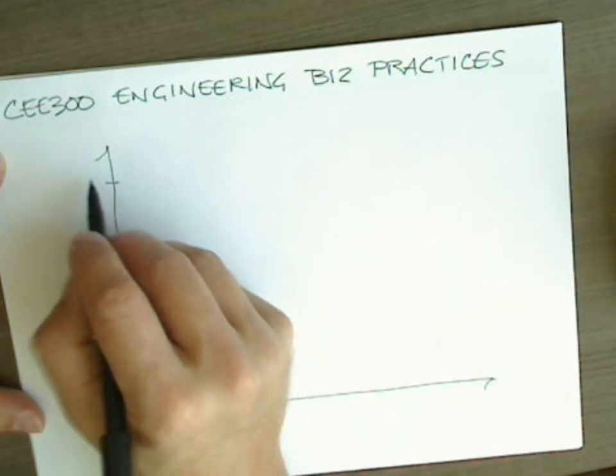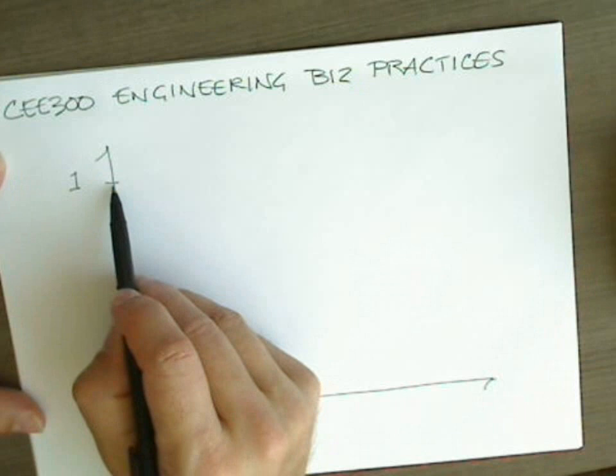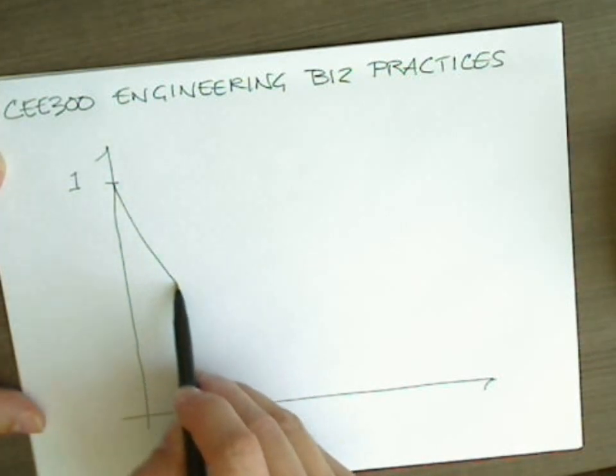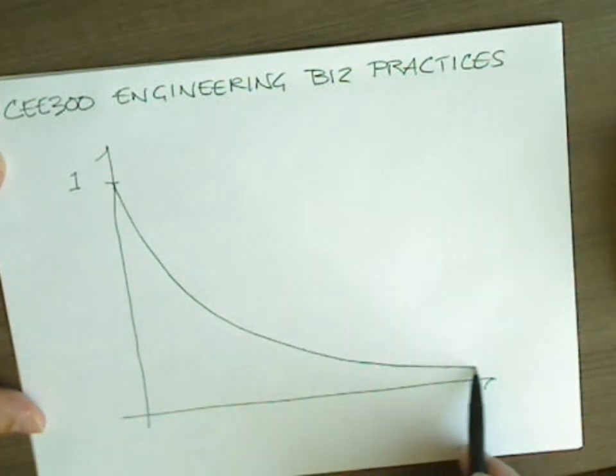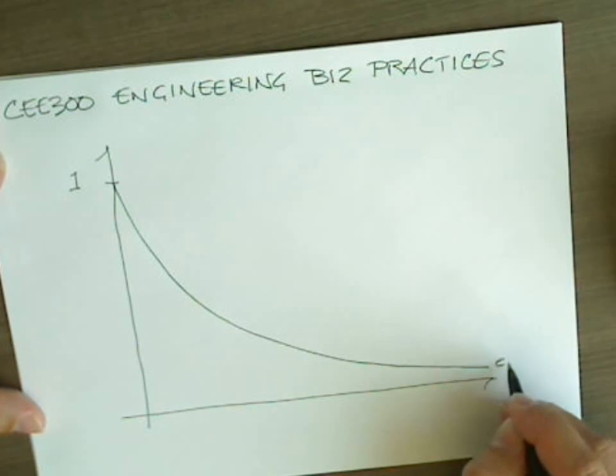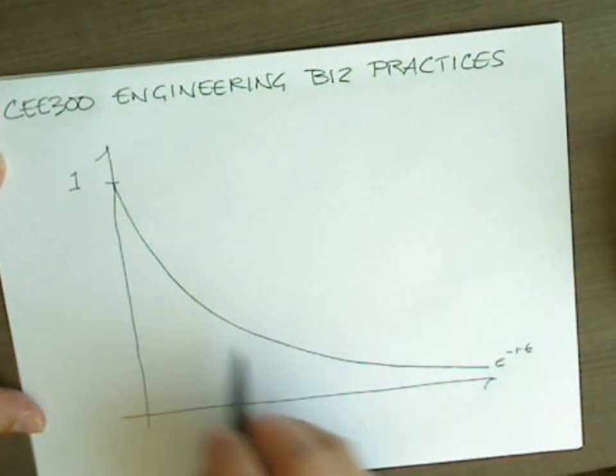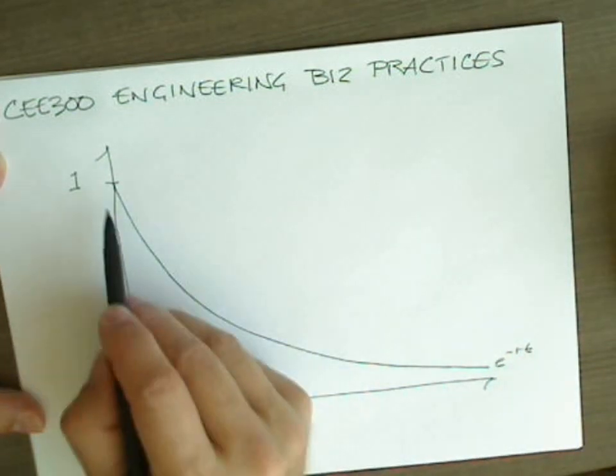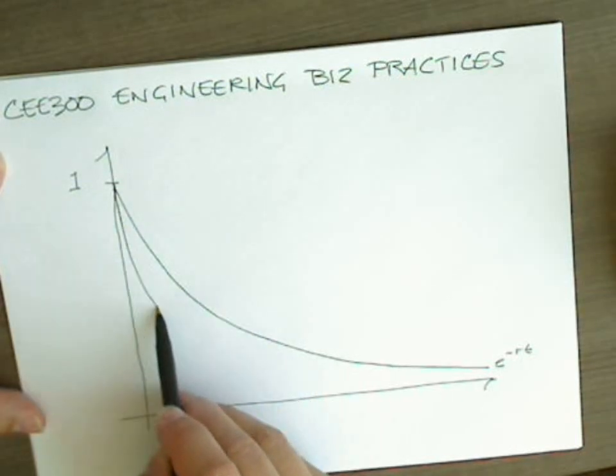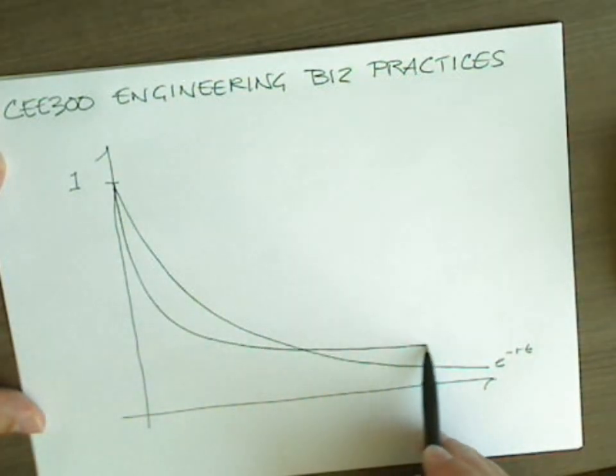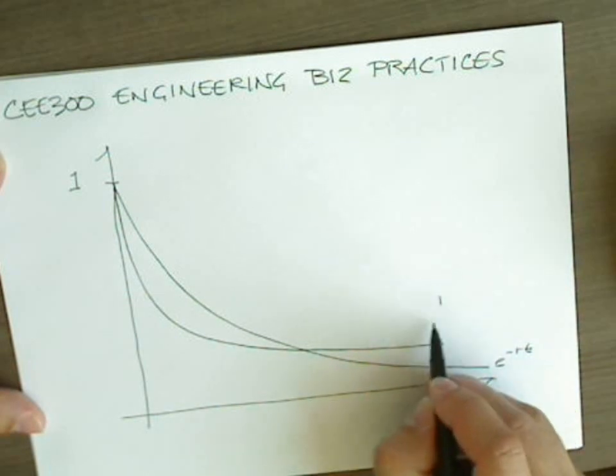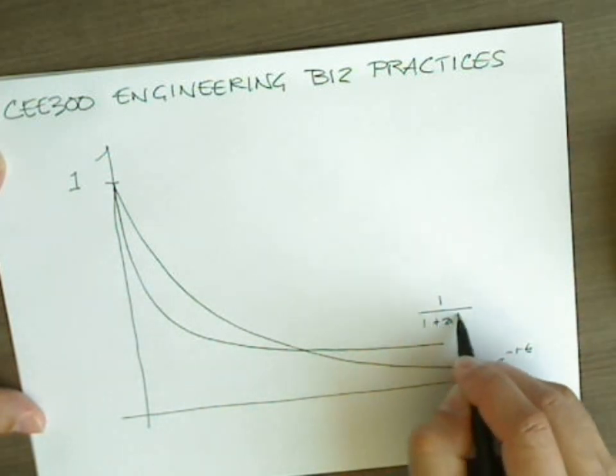In the last video, we looked at two different ways of understanding discounting over time. The first way was our classic e to the negative rt. That's called exponential discounting. But I showed an alternative called hyperbolic discounting, which has a different form. And the general form of that formula could be 1 over 1 plus at.